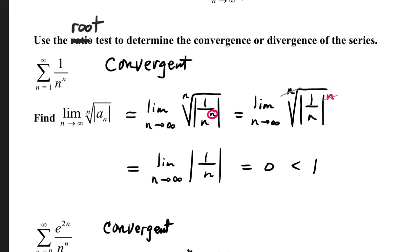They're going to cancel one another, leaving the limit as n goes to infinity, absolute value of 1 over n, that goes to 0. And because that is less than 1, this series is convergent by the root test.